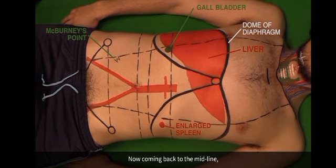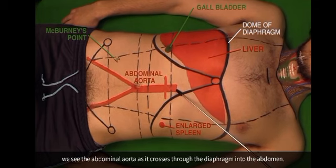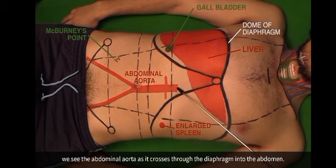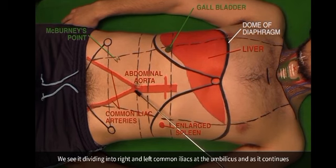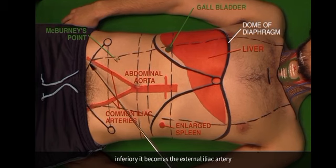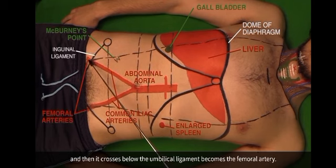Coming back to the midline, just to the left of the midline we see the abdominal aorta as it crosses through the diaphragm into the abdomen. We see it dividing into the right and left common iliacs at the umbilicus. Continuing inferiorly, it becomes the external iliac artery, and then crossing below the inguinal ligament it becomes the femoral artery.